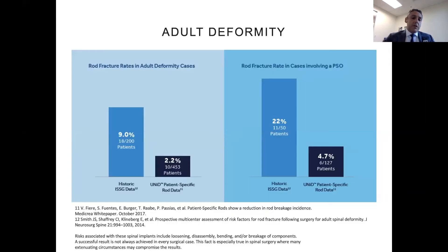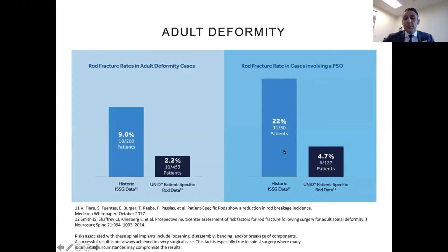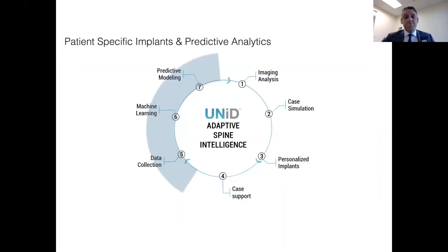Some of the early data in adult deformity using these unit rods show that in non-PSO adult deformity cases, rod fracture rates decreased from 9% down to 2.2%. And in three-column osteotomy cases, rod fracture rate decreased from 22% to 4.7%.